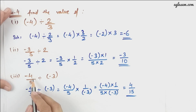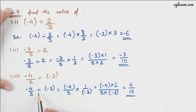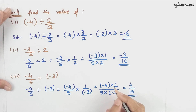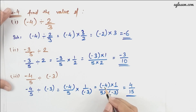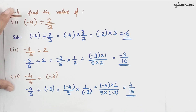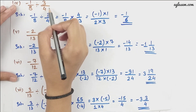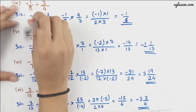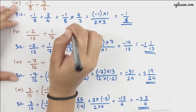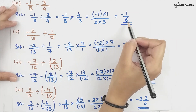Moving further, we have -4/5 divided by (-3). To change the sign, we reciprocal the value, giving us (-4 × 1) / (5 × (-3)). Both minus signs cancel out, and we have 4/15 as our value. Next, -1/8 divided by 3/4: changing the sign and reciprocaling the value gives us -1/6.